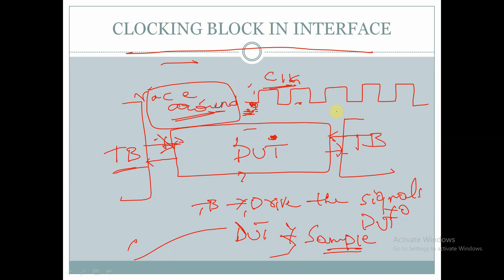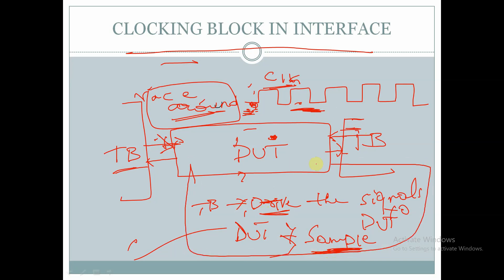So what is the role of this clocking block? The clocking block will provide the information about at which instance the signal should be driven, and at which time unit or instance the signal should be sampled by the DUT and the test bench. This information will be provided by the clocking block.